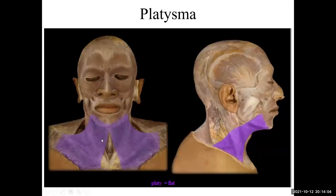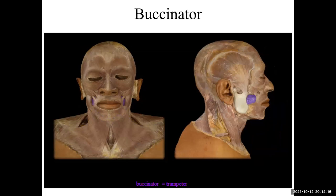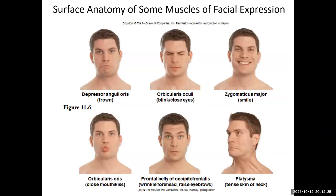Platysma is this big sheet-like muscle on the anterior portion of the neck; when you contract it, it creates a web-like appearance. The buccinator is the muscle that when you're puffing out your cheeks gets quite the workout. Here you can see different expressions demonstrating depressor anguli oris pulling the corner of the lips down, orbicularis oculi closing the eyelids, zygomaticus major and minor lifting the corners of the mouth when smiling, orbicularis oris causing puckering, frontalis wrinkling the forehead and raising eyebrows, and platysma creating its web-like appearance.